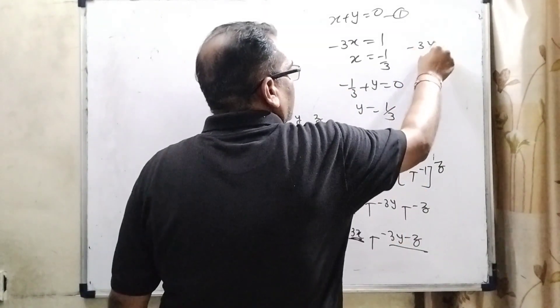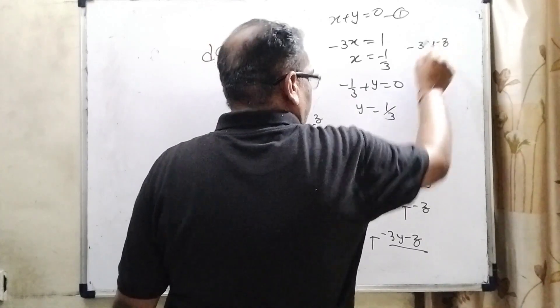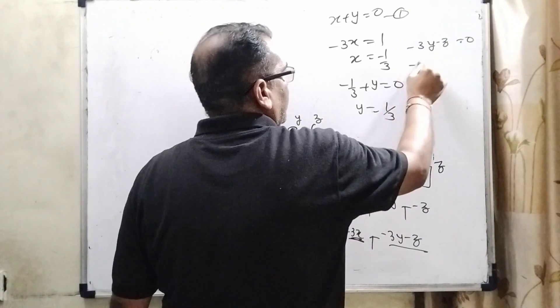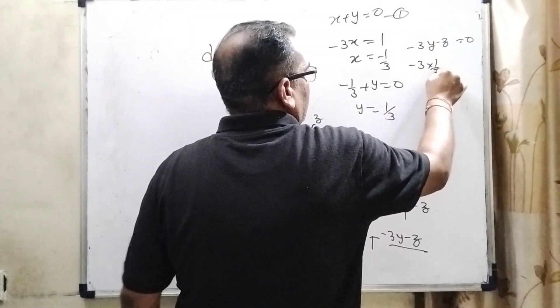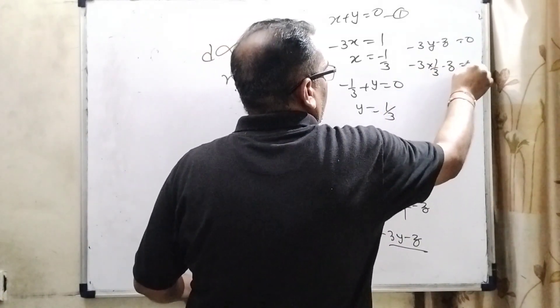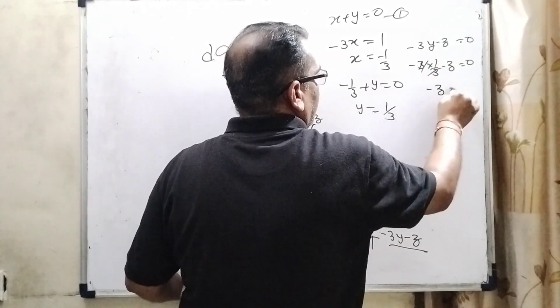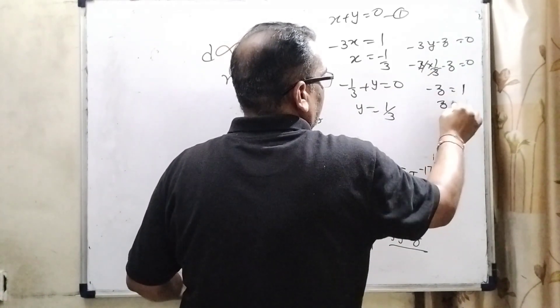And last, -3y - z = 0. Here we have already found y = 1/3. Equals 0, 3 cancels out, then -z = 1, then z = -1.